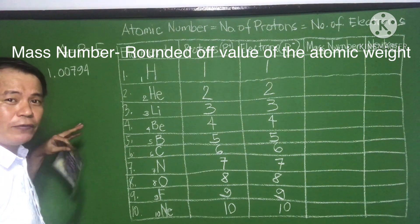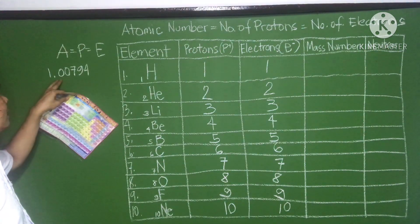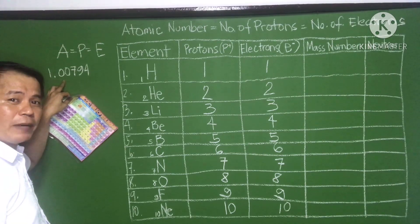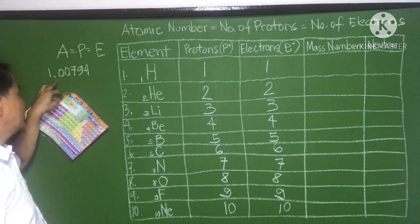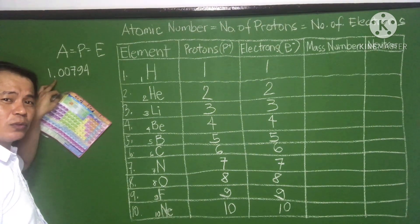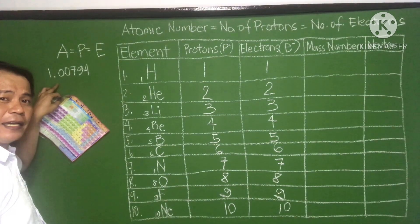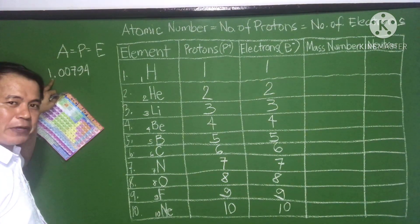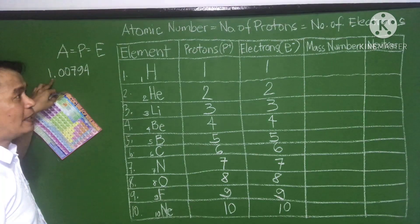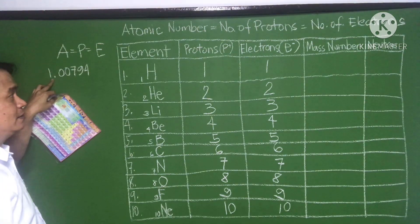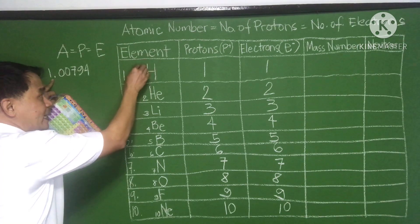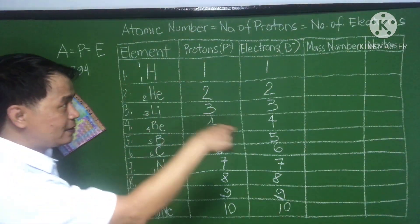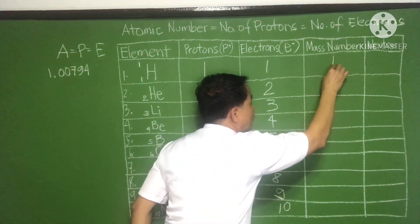Here are the rules for rounding off: if the decimal place is followed by 0, 1, 2, 3, or 4, you just retain the number. So for hydrogen with atomic weight 1.0079, the mass number would be 1.